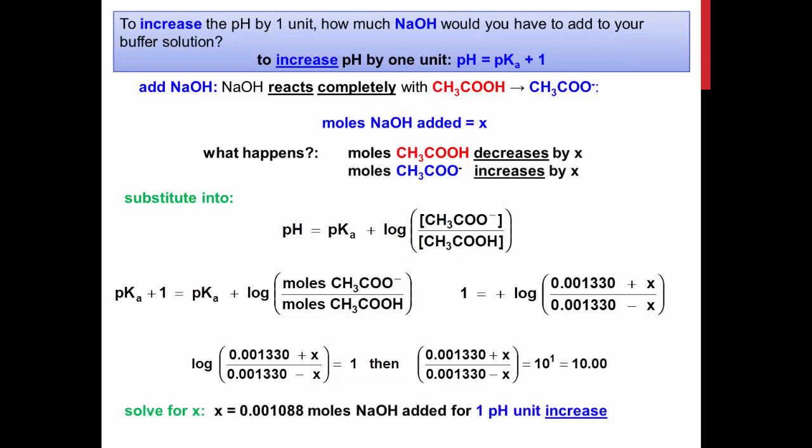Solving this expression for x will give you the theoretical number of moles of sodium hydroxide that have to be added to the buffer solution to cause a pH shift of positive one.